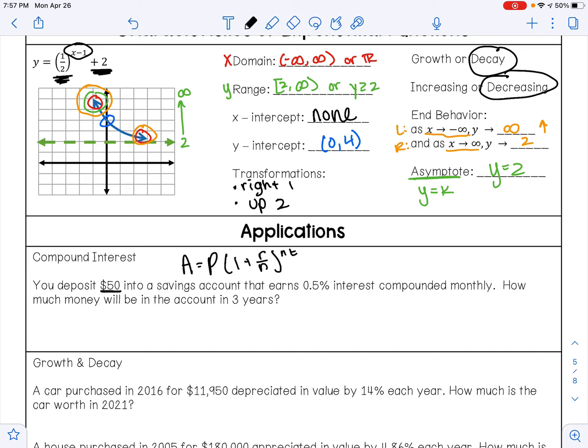So the amount you deposit is your principal amount, so that's your P value. If I'm earning 0.05% interest, remember we always need to convert that out of a percentage. To do that, I'm going to divide by 100, and so I'm going to get 0.005. If I'm compounded monthly, then that means N is 12. And I want to know how much is going to be in the account after three years, so T is 3.